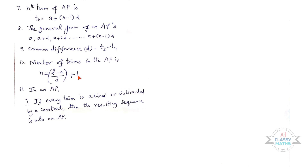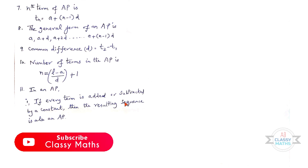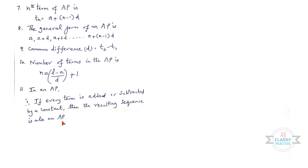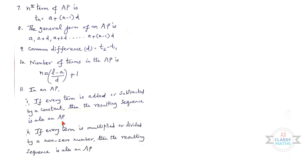Eleventh point: In an AP, if every term is added or subtracted by a constant, then the resulting sequence is also an AP. Also, if every term is multiplied or divided by a non-zero number, then the resulting sequence is also an AP.